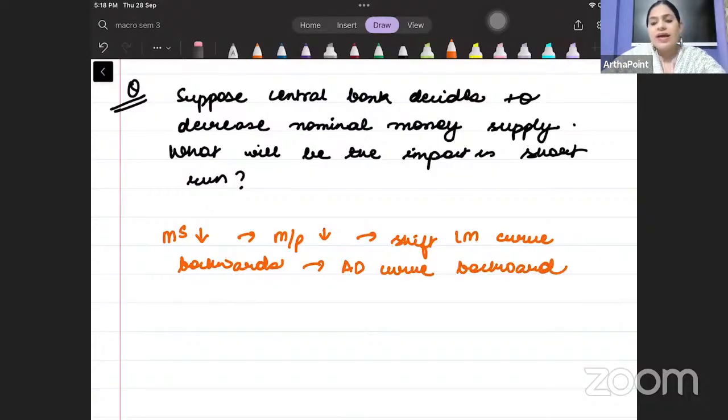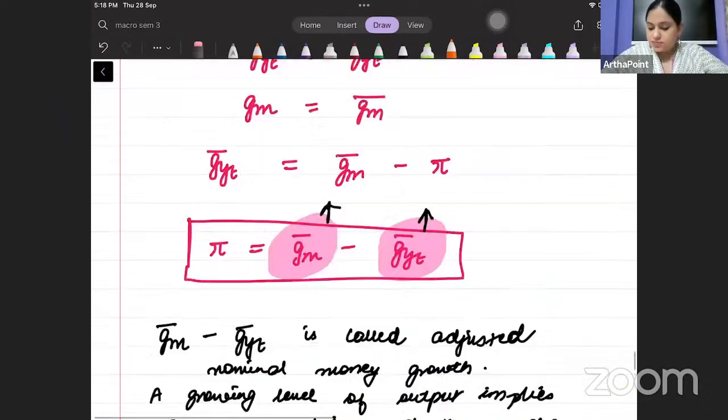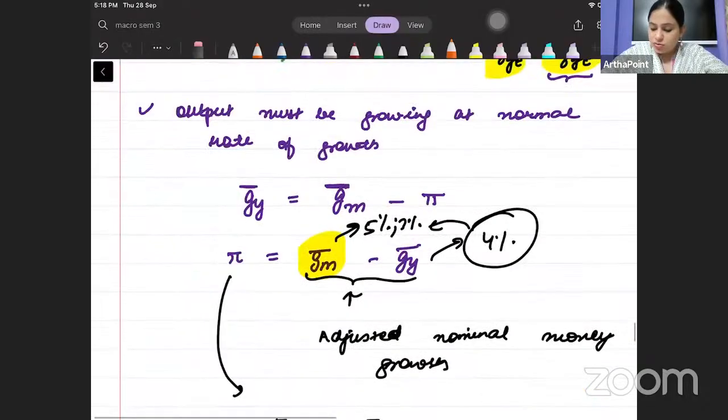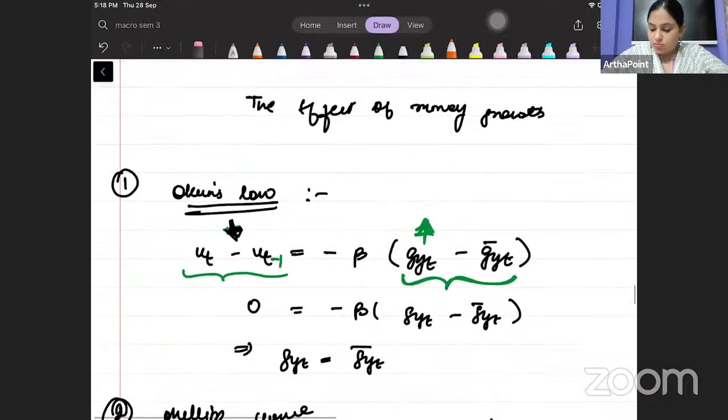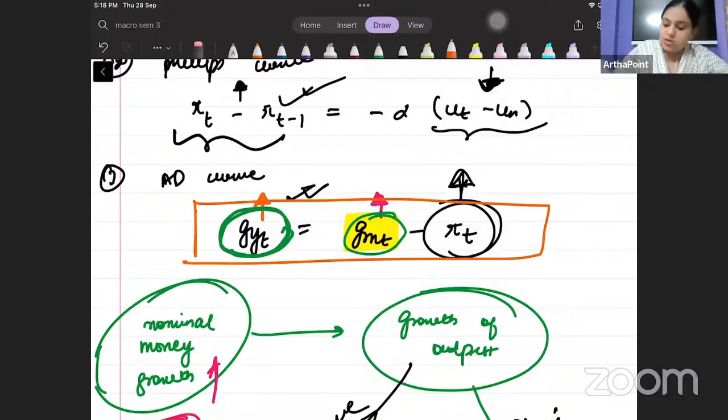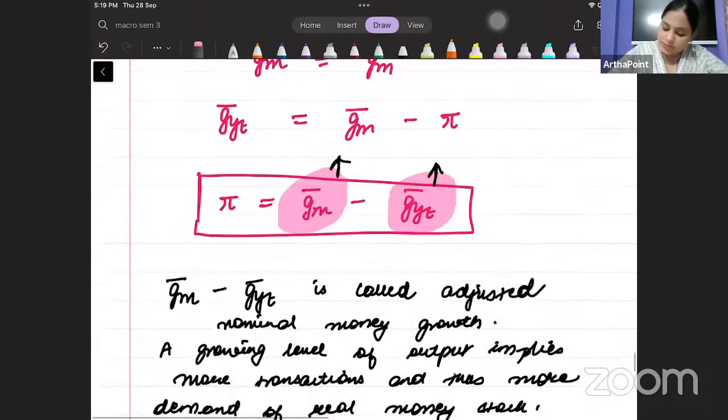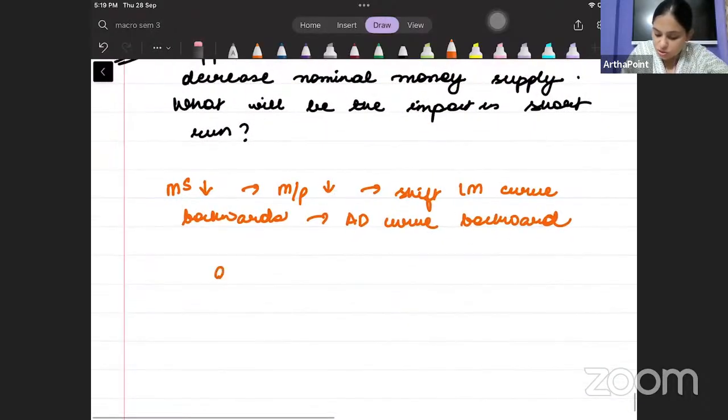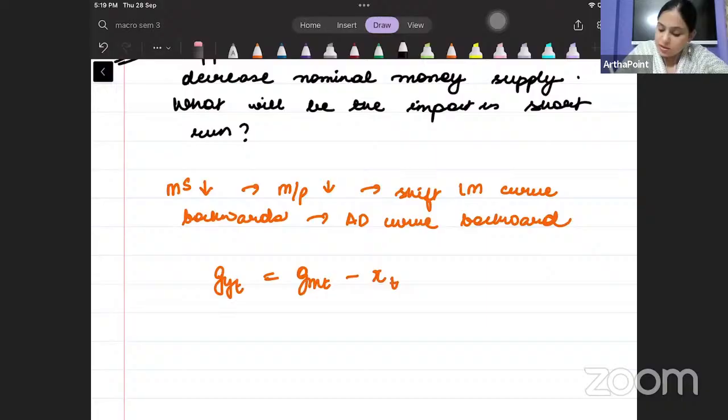If you remember, what is the AD relation? When I talked about my AD relation, this was it: GYT is equal to GMT minus pi T. So when the growth of money is falling, when money supply is falling, then output growth will also fall. GYT is shifting backward, output should reduce. So there will also be a decrease in the output growth.